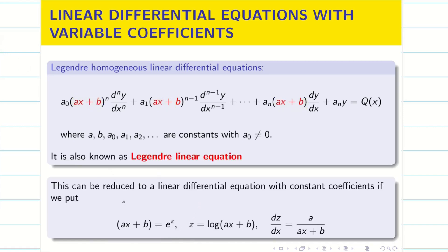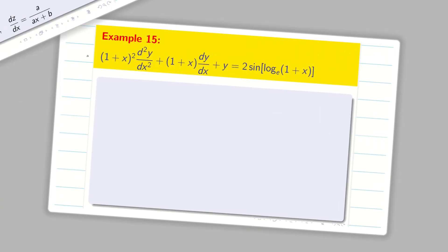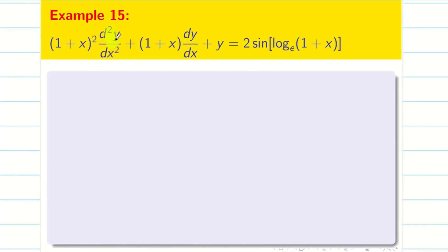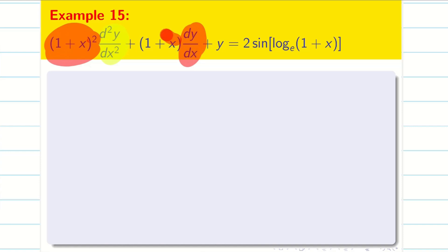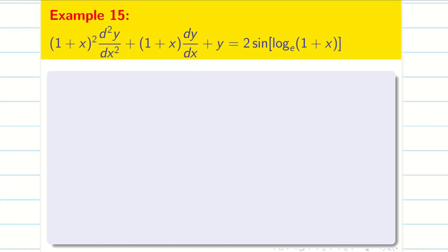The assumption says ax + b should be e^z. So z is equal to log(ax + b). Let us go into the problem. We check d²y/dx² and we have (1 + x)² whole square. dy/dx, we have (1 + x) as coefficient, and here also we have terms in (1 + x). It is of the form of Legendre linear differential equation.